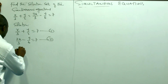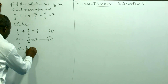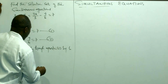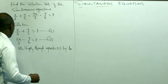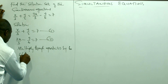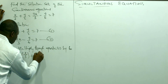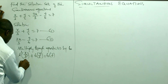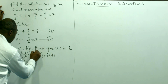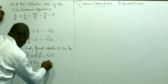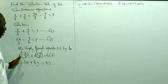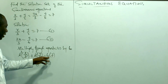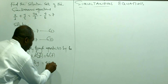So we multiply equation 1 through by 6. When I multiply through, the 3 will cancel into 6 giving 2, so I get 2x. The 2 will cancel into 6 giving 3, so I get 3y. And 6 times 7 is 42. Let's call this equation 3.